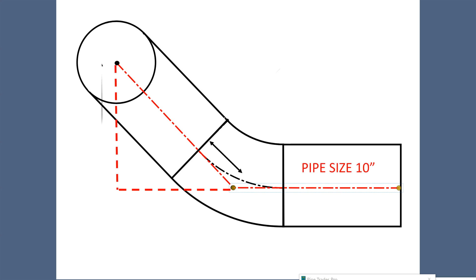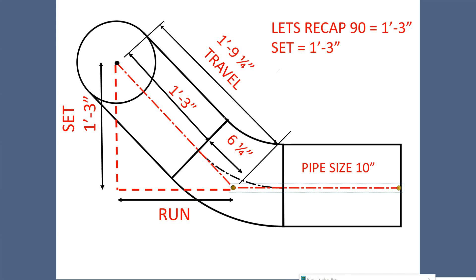We can recap and say that when we know the 90 takeoff, we know the set. One foot three is the 90 and the set is one foot three. So, let's try another one.